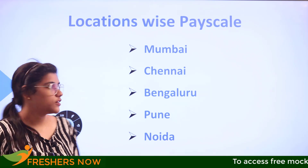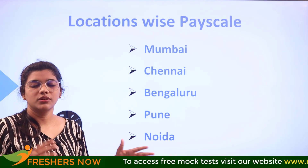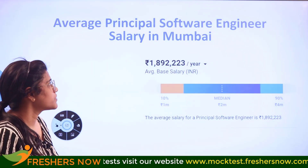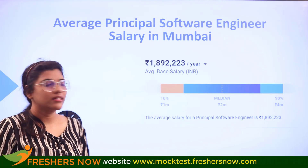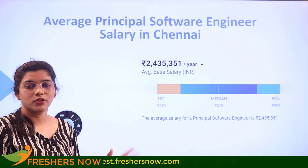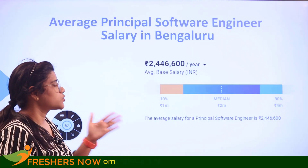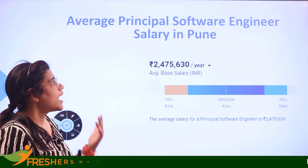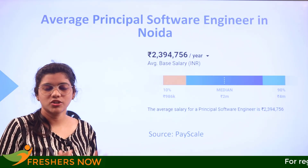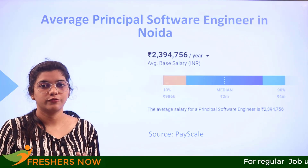The location-wise salaries of a principal software engineer across major cities: in Mumbai, a principal software engineer is paid 18 lakhs per annum; in Chennai, 24 lakhs per annum; in Bengaluru, 24 lakhs 46,000; in Pune, 24 lakhs 75,000; and in Noida, 23 lakhs per annum. It depends upon the location and also the company you are working for.